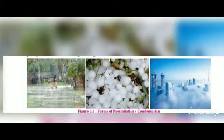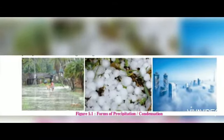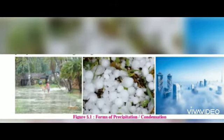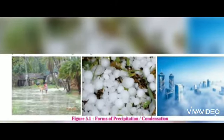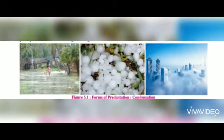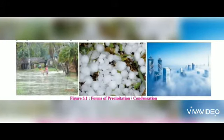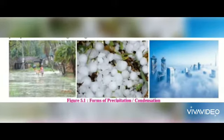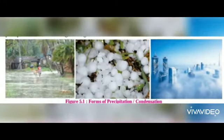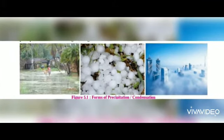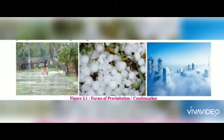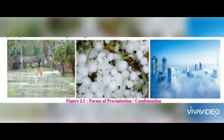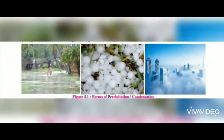Let us revise what we just learnt in the lesson. The first thing was precipitation: when water falls in solid or liquid state on earth's surface, it is known as precipitation. When temperature falls below the freezing point, water vapour directly turns into snowflakes — this process is called sublimation.